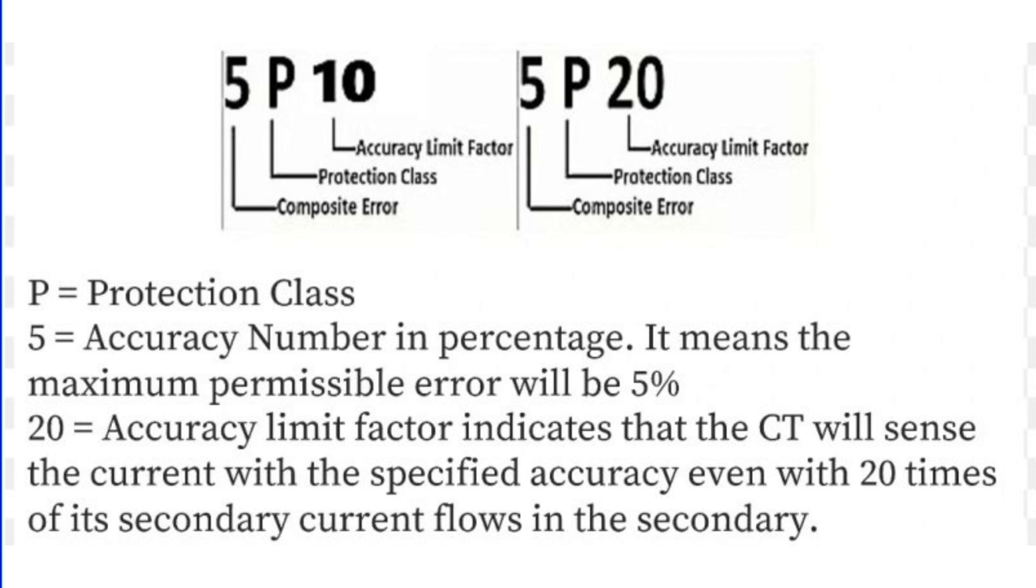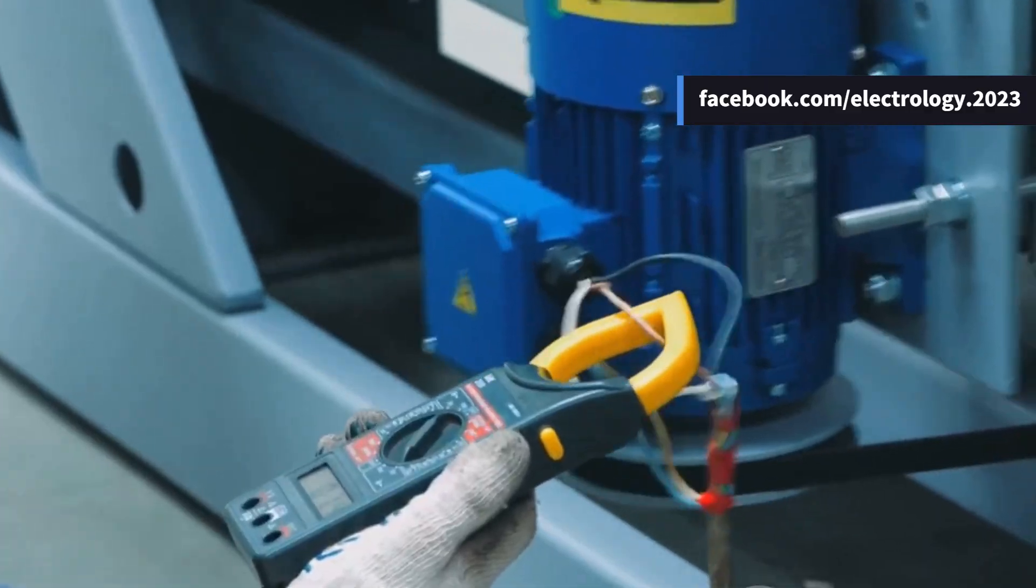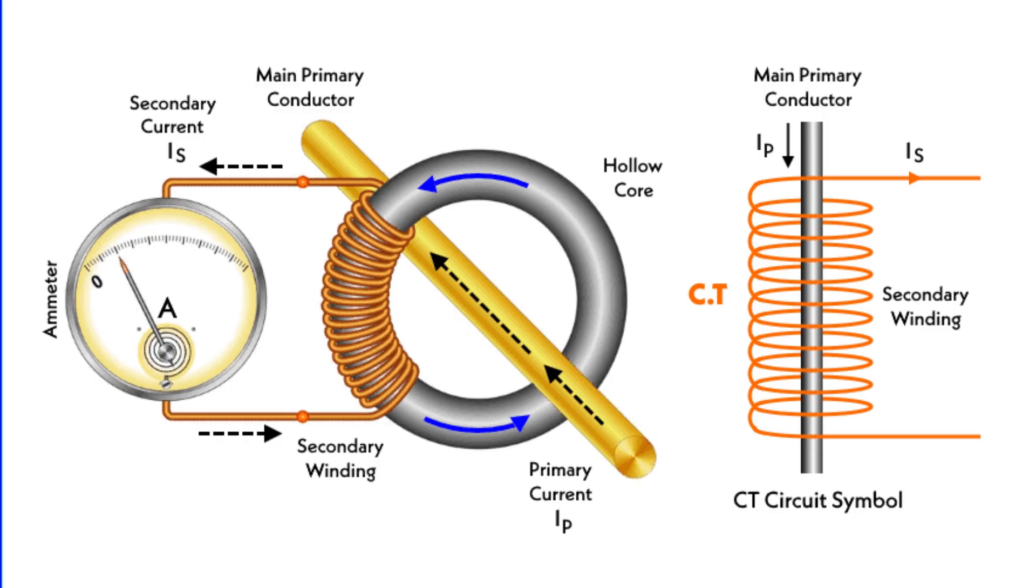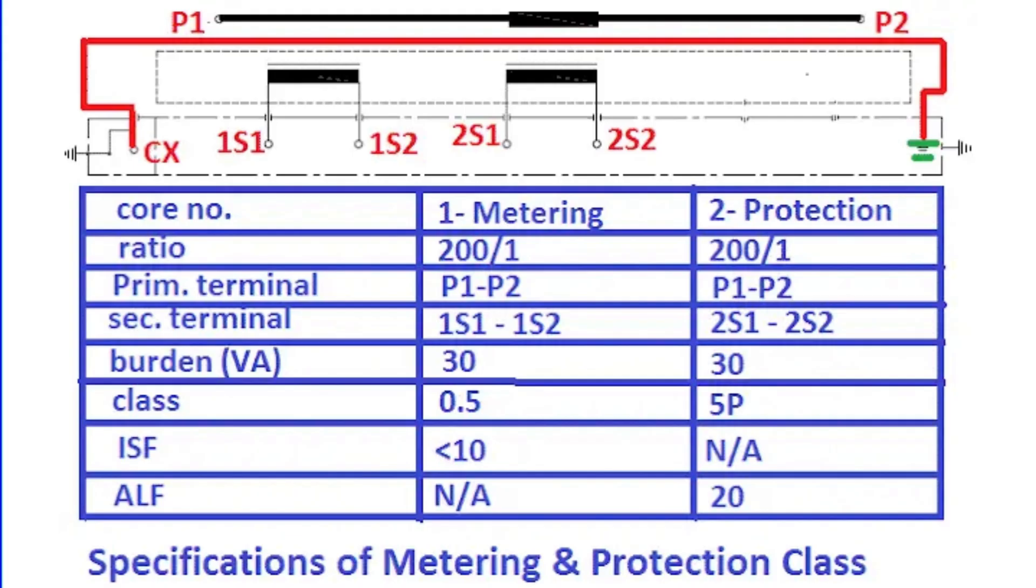Now let's talk about metering CTs. These CTs are optimized for measuring currents accurately when the primary current ranges from 1% to 120% of the rated current. A unique feature of metering CTs is the instrument safety factor or ISF, which protects meters during faults.